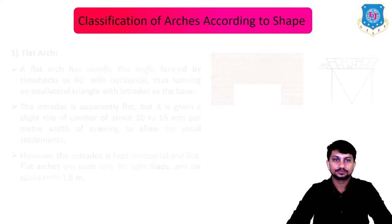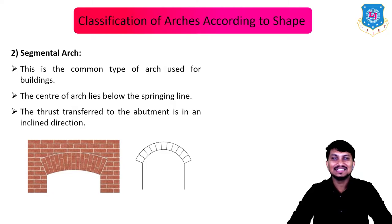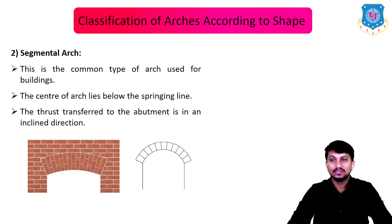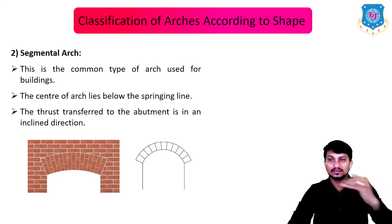The second type is segmental arch, which is the most common type used for buildings. The center of the arch lies below the springing line. The thrust is transferred to the abutments in an inclined direction.